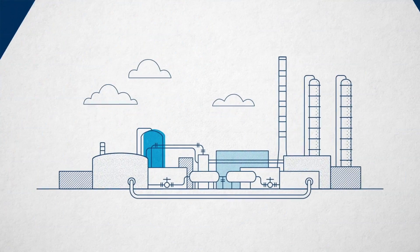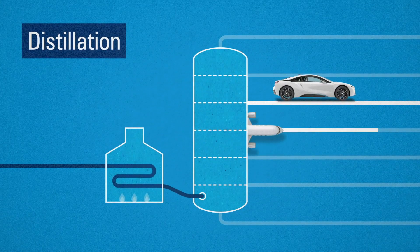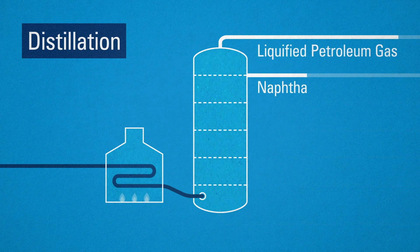Processing crude, for example, gives you petroleum or kerosene as well as liquid gas and naphtha.